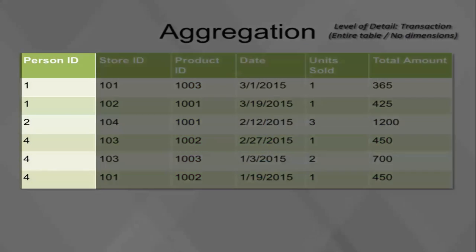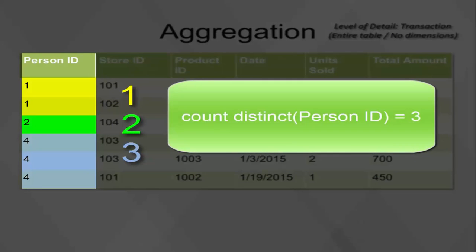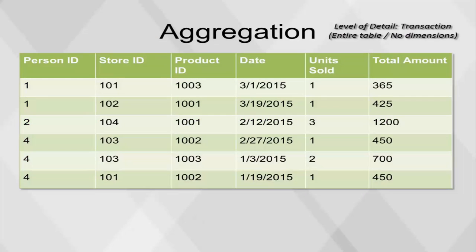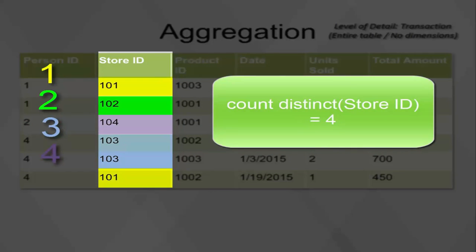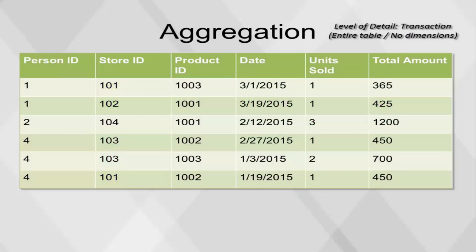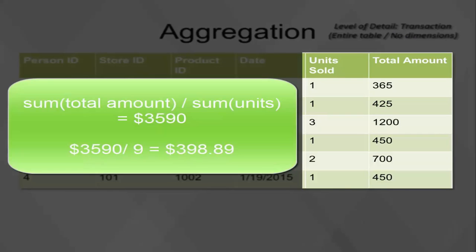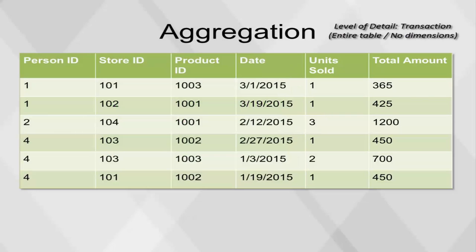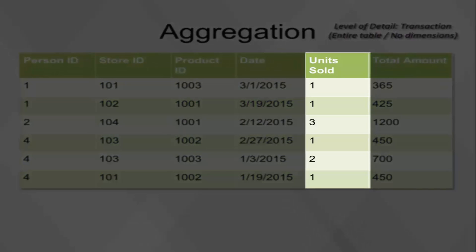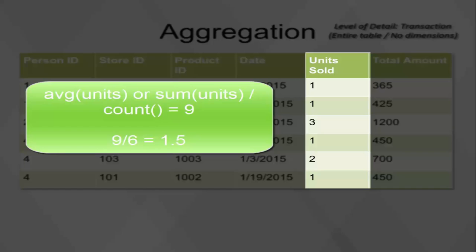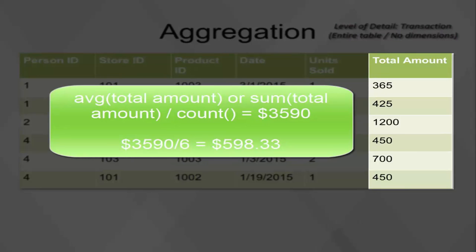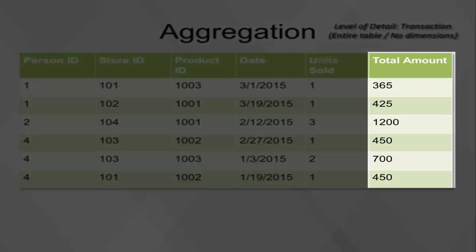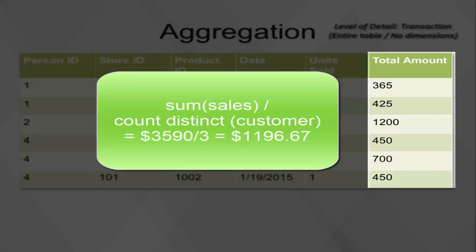How many customers? How many stores had sales? What was the average number of units sold per transaction? 1.5. What was the average amount spent per transaction? $598.33. What was the average amount spent per customer? $1,196.67.